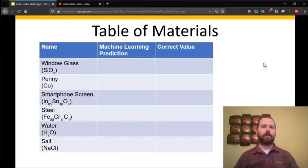So what we're going to do is we're going to look at this list of materials and we're going to come up with our own predictions and then we're going to compare to predictions from a machine learning model. So let's look through these materials. First we have window glass, we have a penny, we have a smartphone screen, we have steel, water, and salt.